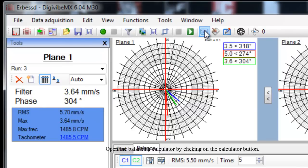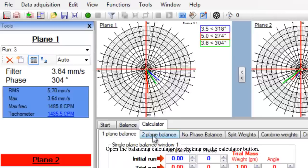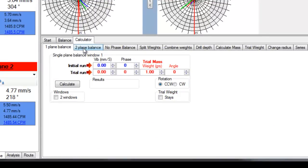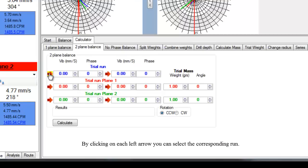Open the balancing calculator by clicking on the calculator button. Select the two plane balance tab. By clicking on each left arrow, you can select the corresponding run.